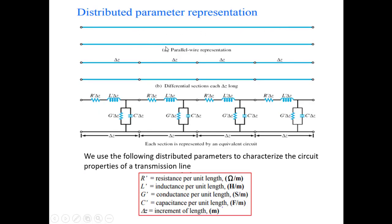A two-wire parallel line can be divided into a number of sections of small length delta Z. When current flows through the line, resistance is offered by the conductor, represented by R'. The magnetic field developed across the line is represented by inductance. The two wires act as a capacitor, represented by C. Since this capacitor is not perfect, some leakage current flows through it, represented by conductance G.